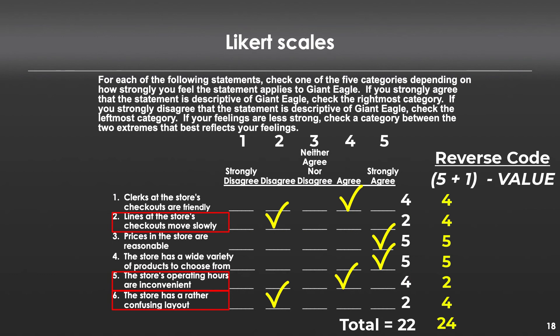We can then sum those values up, and that number — 24 — is a correct representation of the total attitude that someone has. We could also compute an average across those six items; it's the same thing, we're just dividing by six or not. And then you might want to ask yourself, well, what do I do with that? Do I celebrate that my store has a 24 response? No. 24 means nothing in the absolute. It is only useful when compared to something else. So for example, let's say 24 is the average across a bunch of people — we can compare those responses to last quarter's responses.